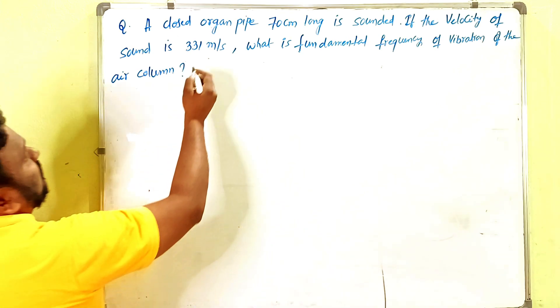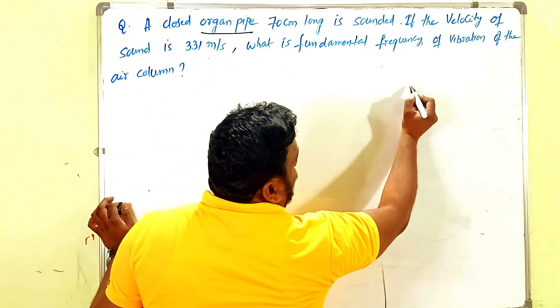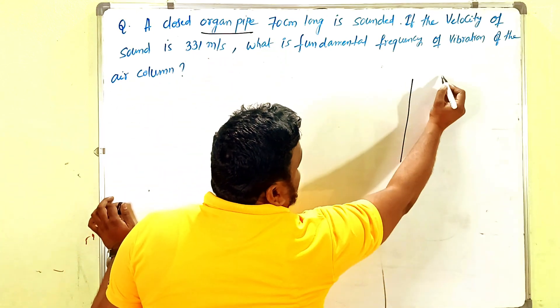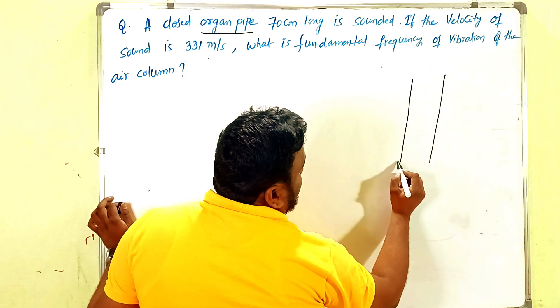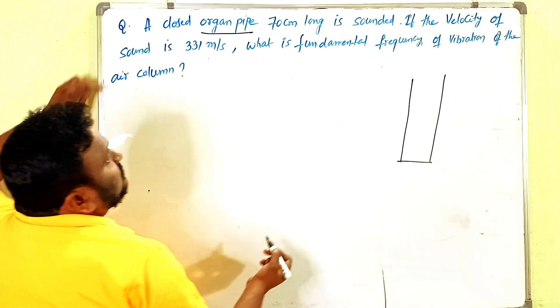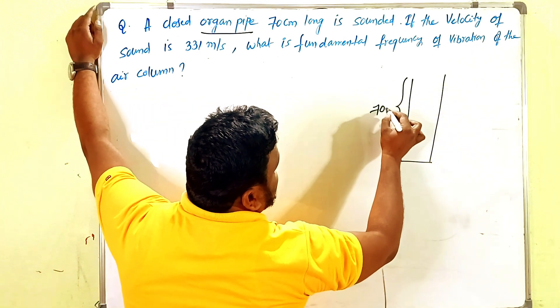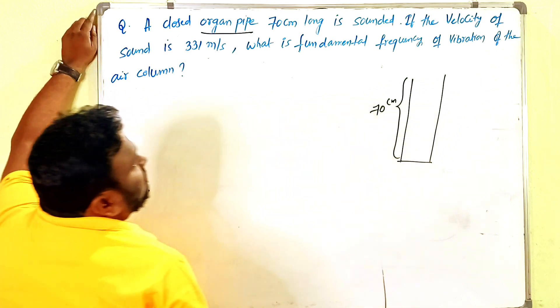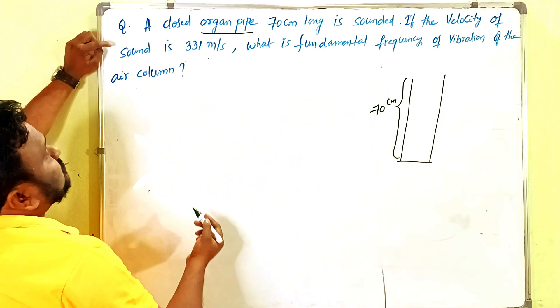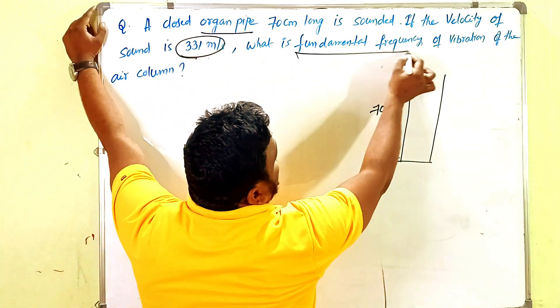One closed organ pipe is there. What is meant by closed pipe? One end is closed and one end is open—that's what we call a closed pipe. It has length 70 centimeters. If the velocity of sound is 331 meters per second, what is the fundamental frequency?